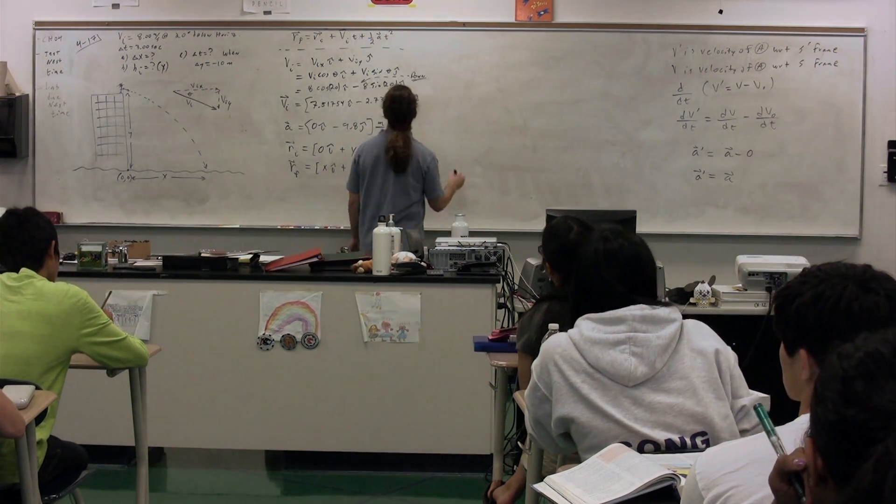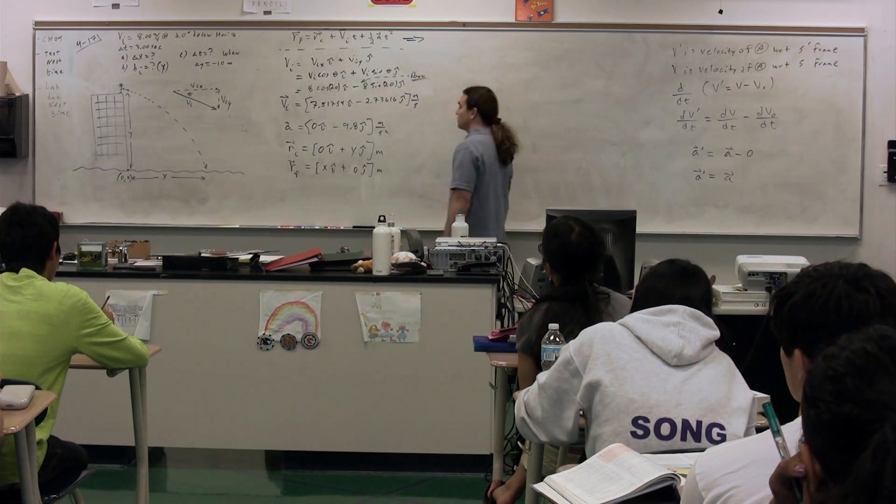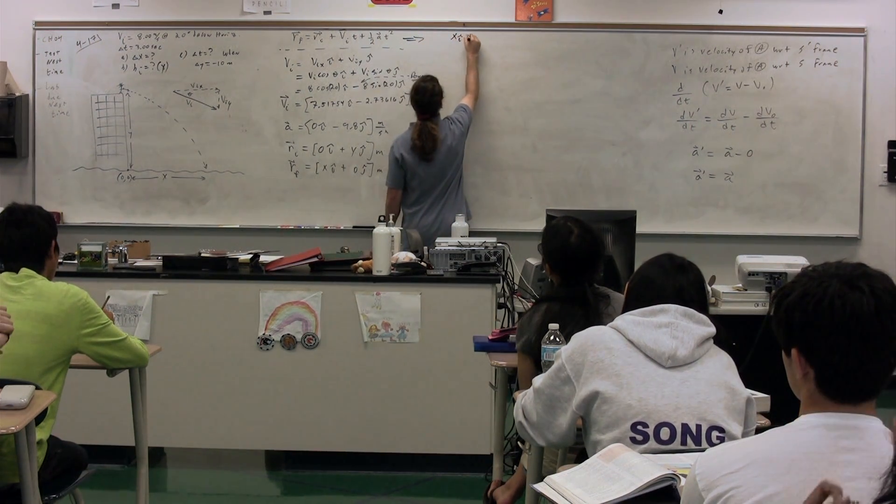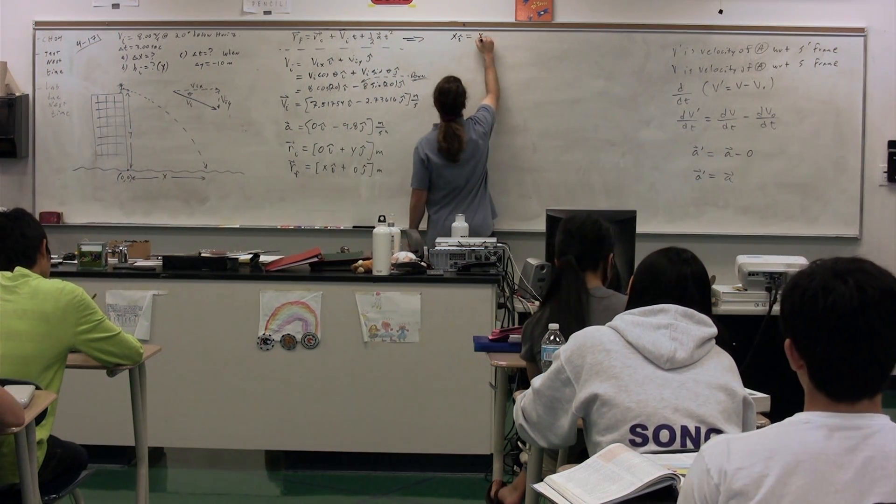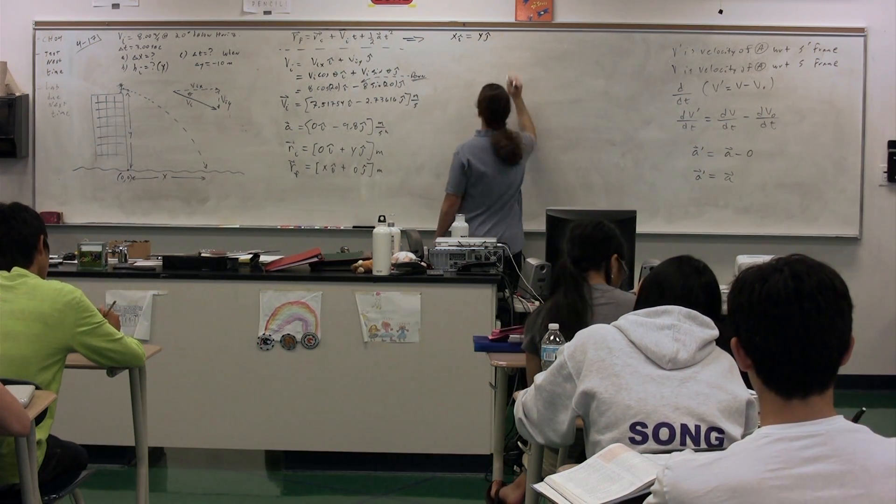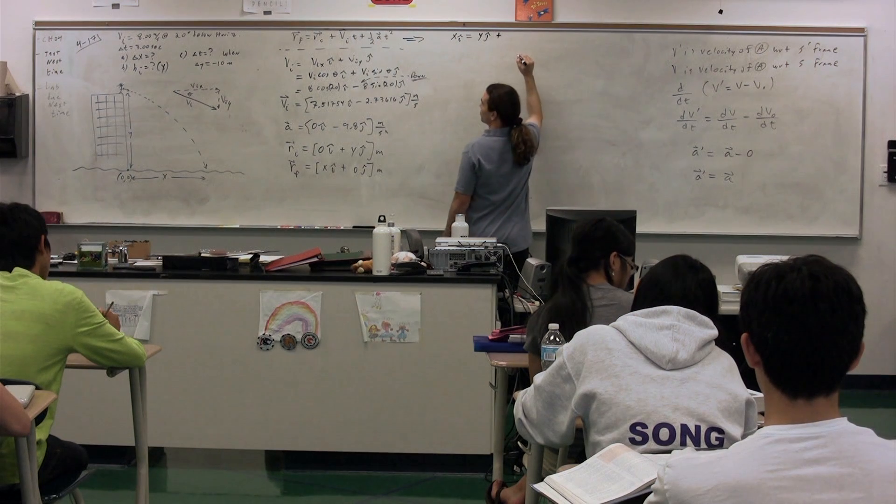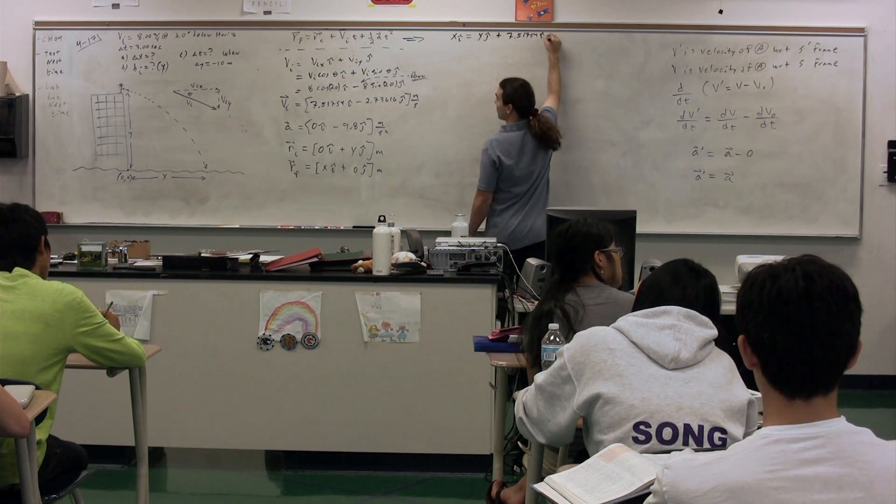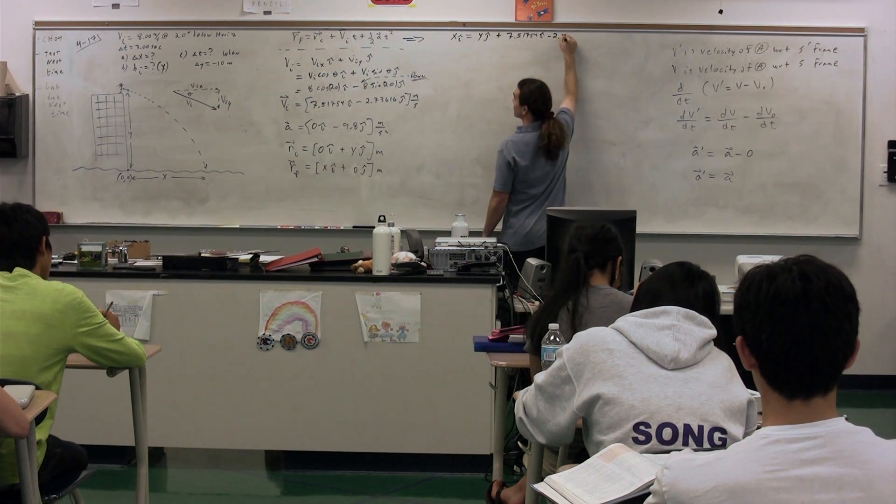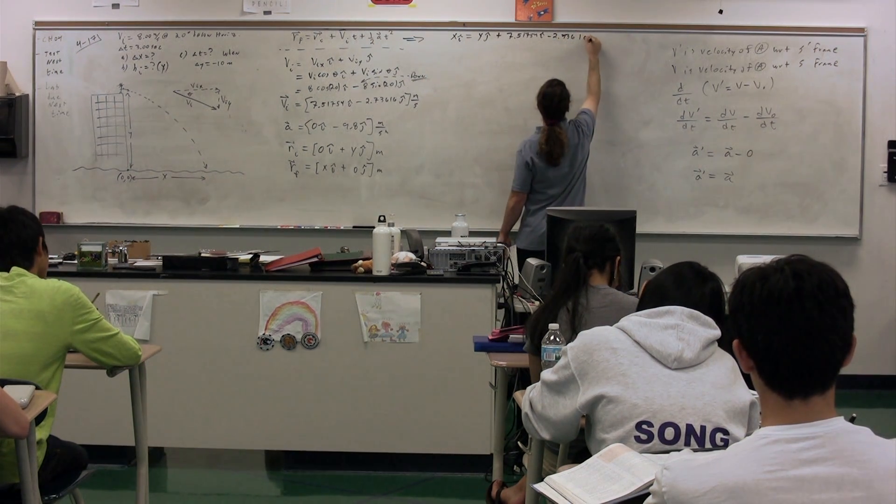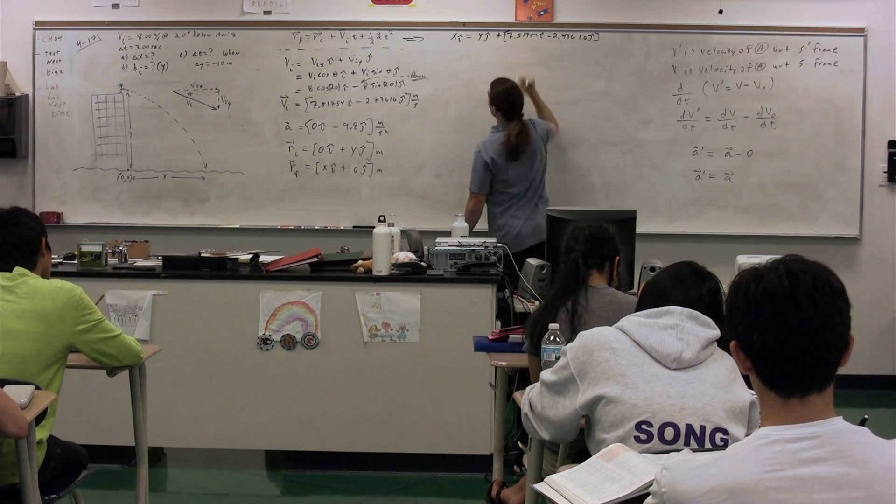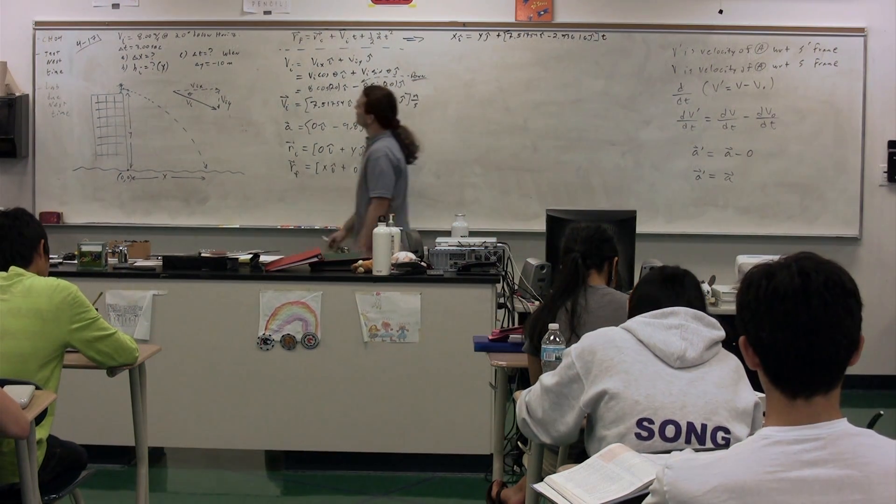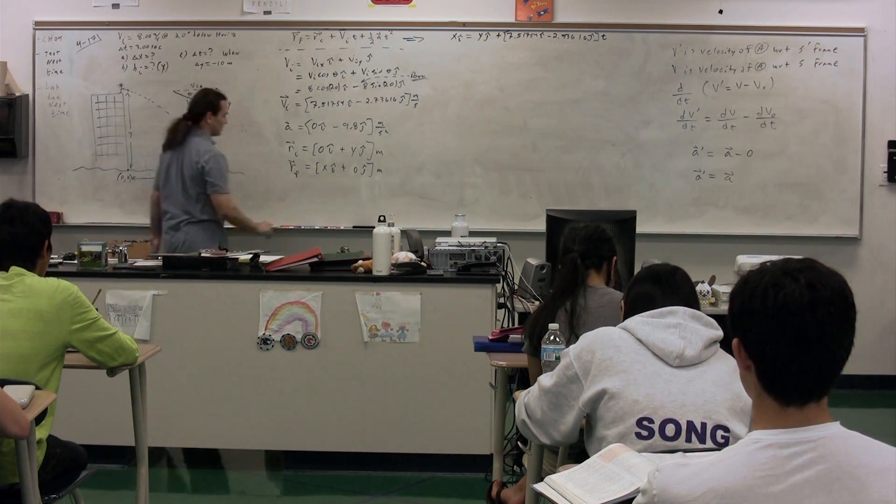So coming back to our original equation, we can now substitute into this. We know position final, which is x i, is equal to position initial, which is y j plus the velocity initial, which was 7.51754 i minus 2.73616 j multiplied by our time, which is what we're solving for, right? No. Actually, we know the time. I'm sorry. It's three seconds.